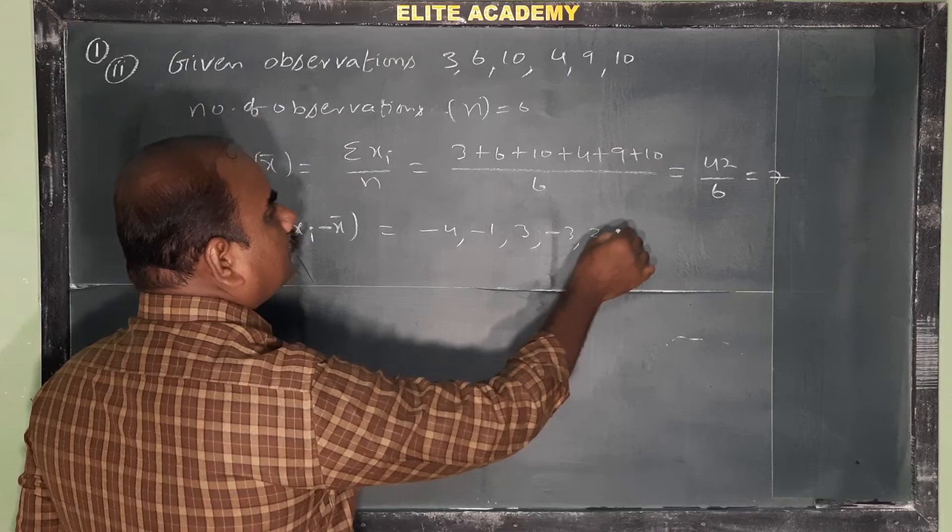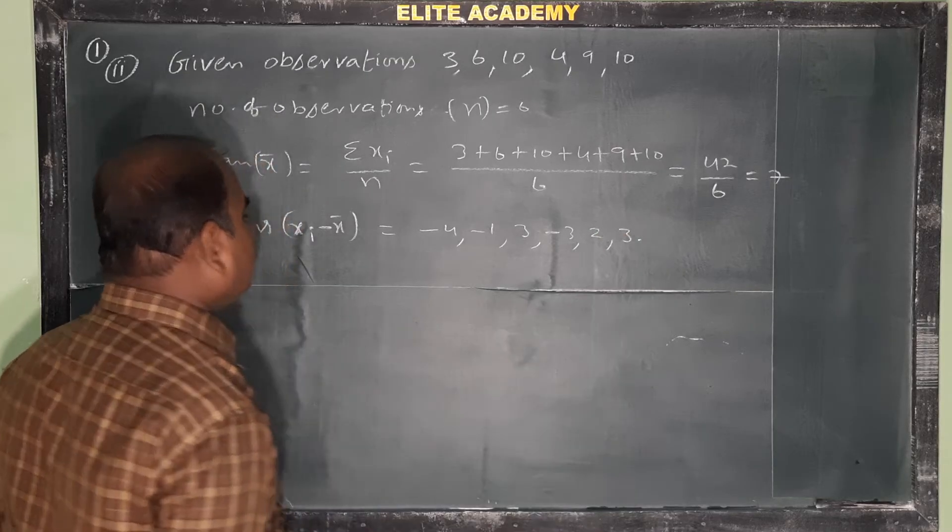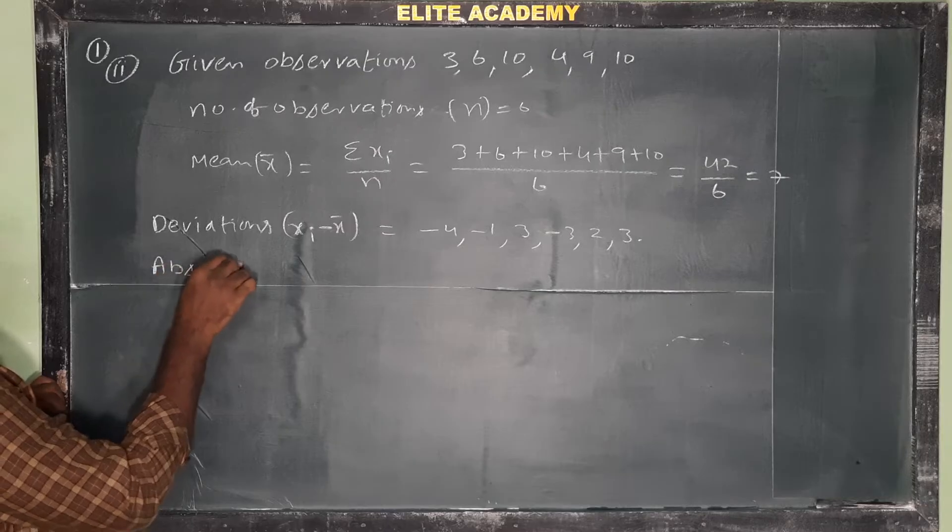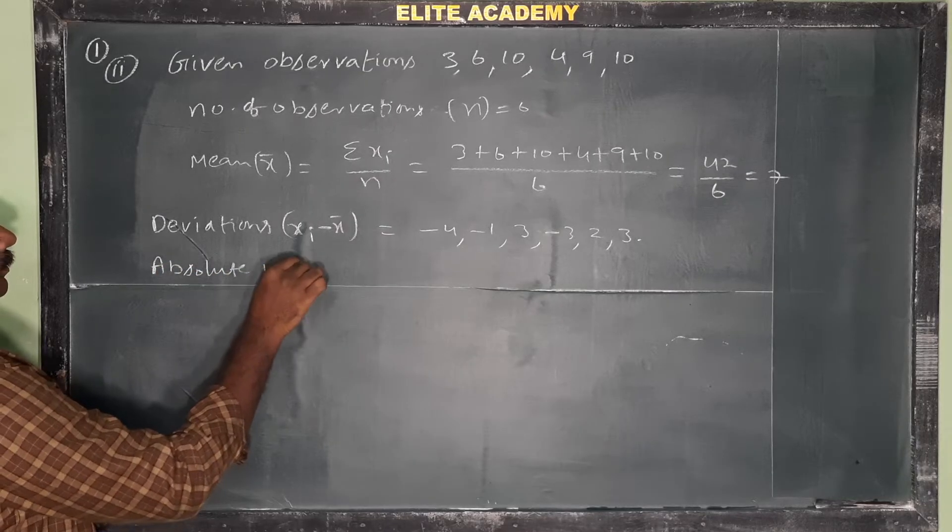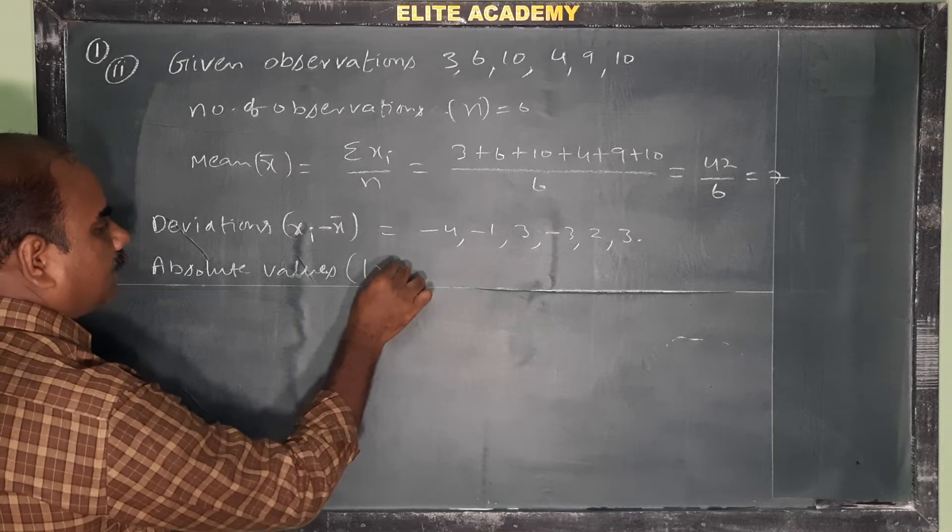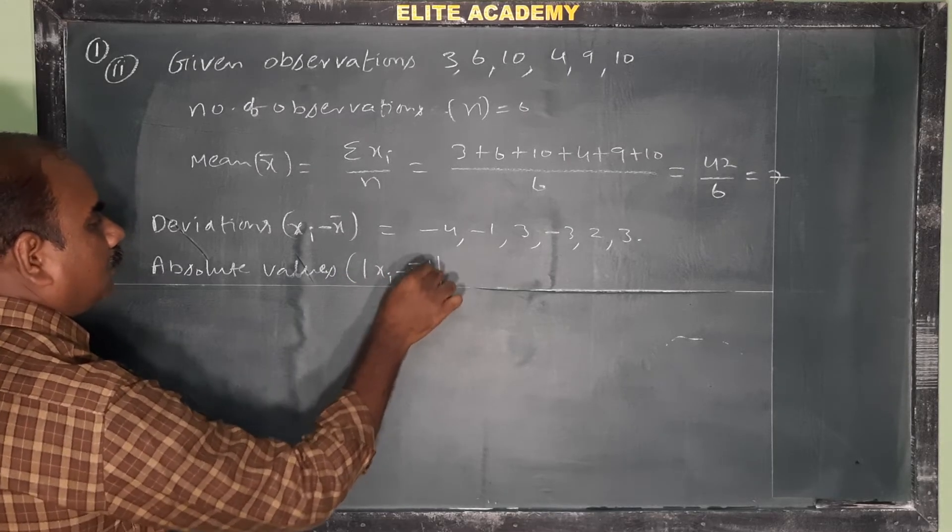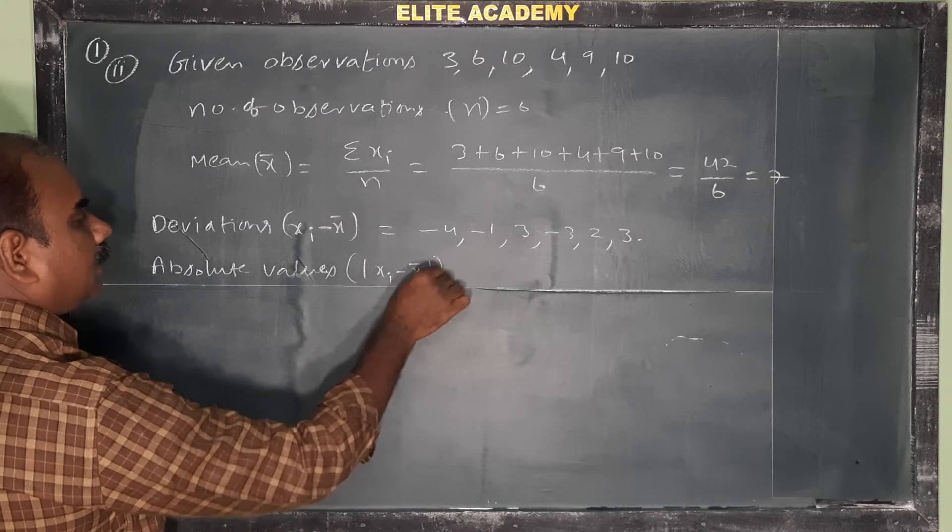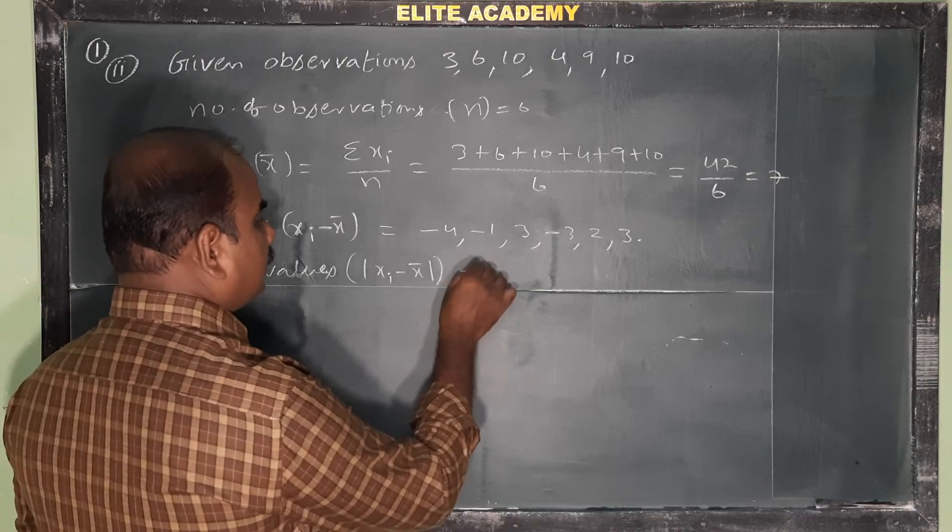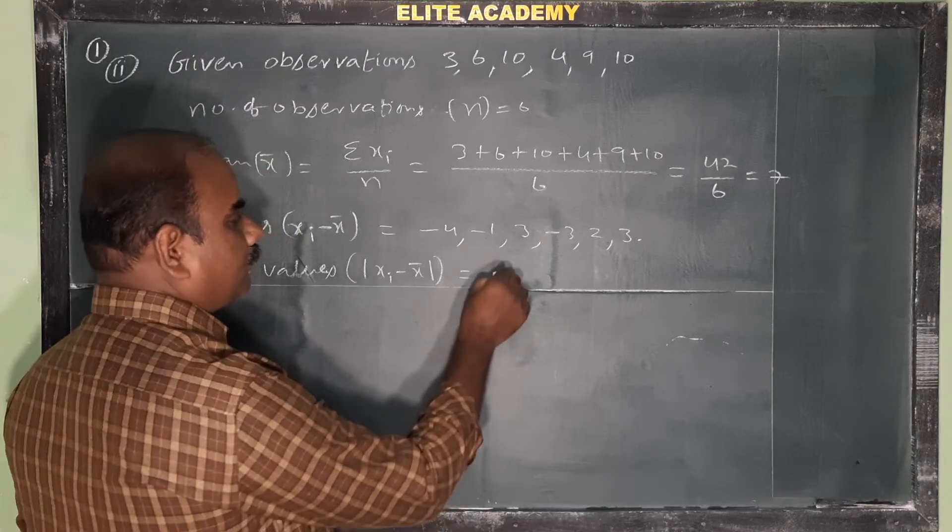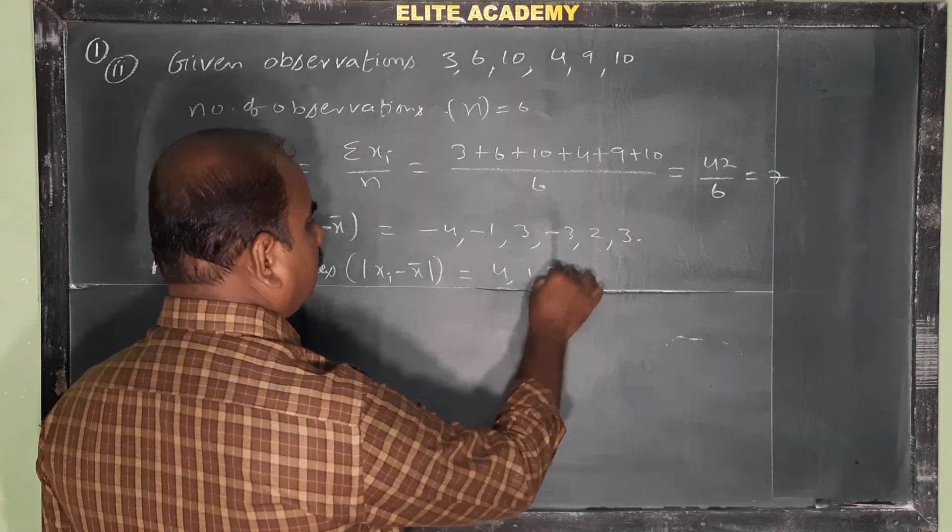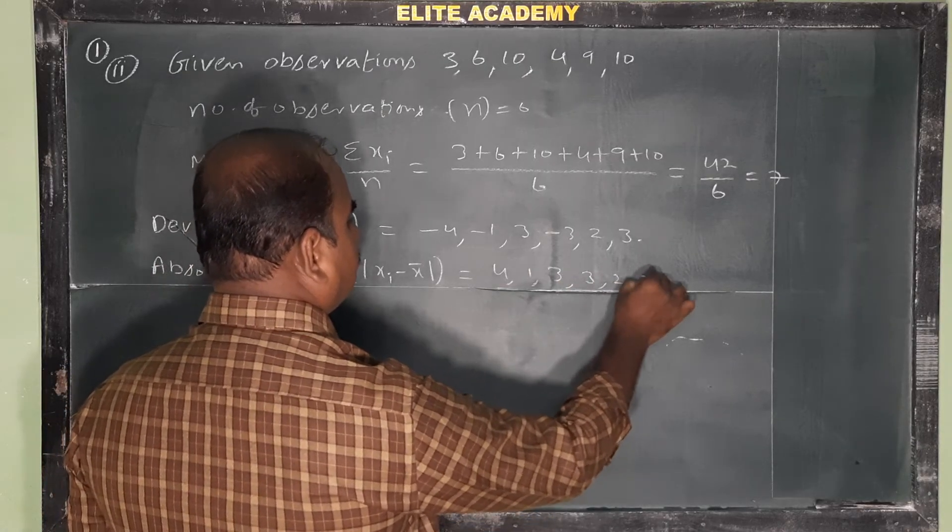Now absolute values, the modulus of xi minus x bar. We take the absolute values. So minus 4 becomes plus 4, minus 1 becomes plus 1, 3 stays 3, minus 3 becomes plus 3, 2 stays 2, 3 stays 3.